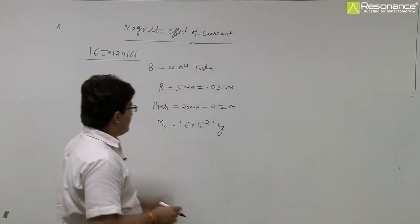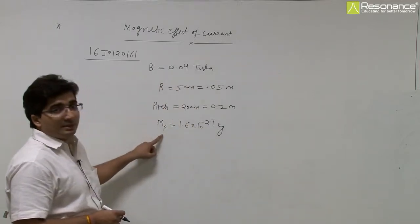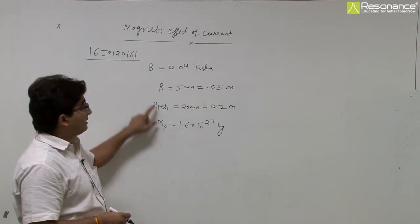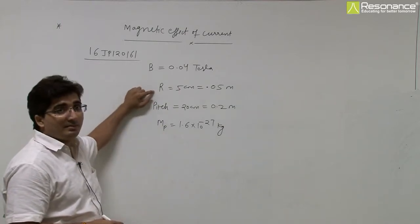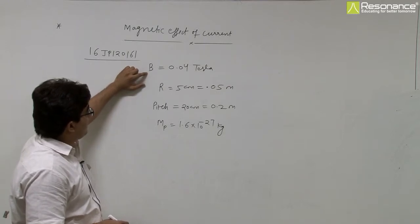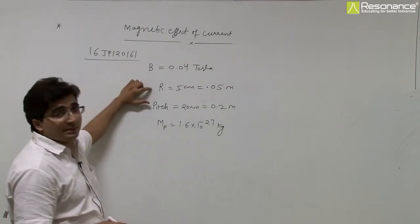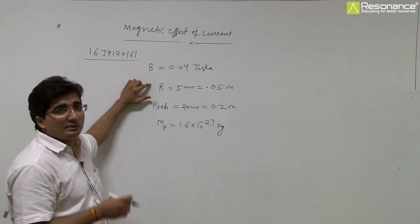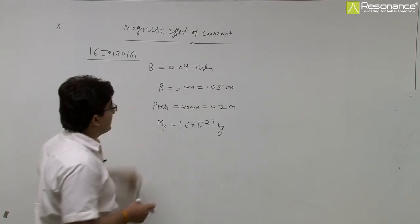In this question, pitch of particle is given, mass of particle proton is given, radius of helical path is given, and a magnetic field is given. It is asked what is the speed of particle along the magnetic field and perpendicular to the magnetic field.